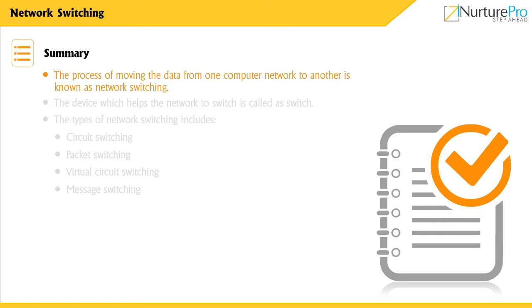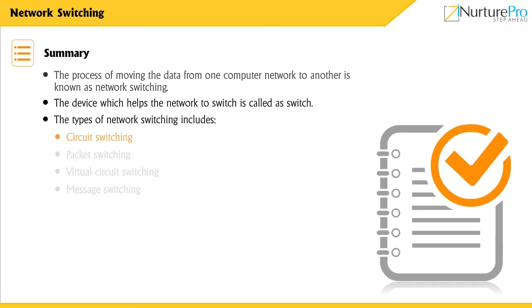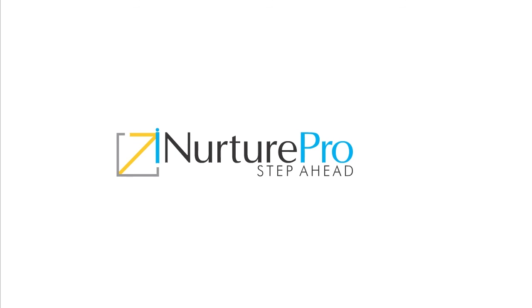Let's have a quick recap on what we discussed. The process of moving data from one computer network to another is known as network switching. The device which helps the network to switch is called a switch. The types of network switching are circuit switching, packet switching, virtual circuit switching, and message switching. Thank you for watching this video. We will see you in the next video.